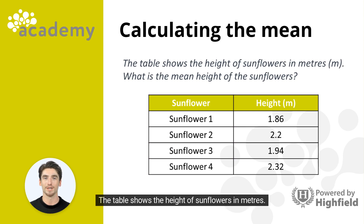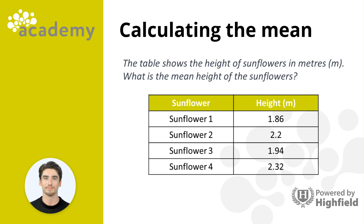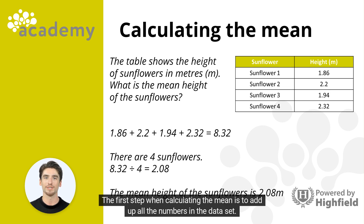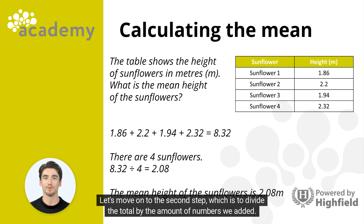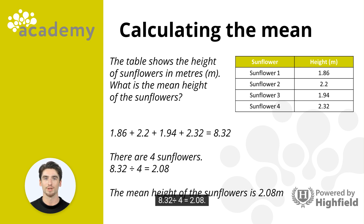Now it's your turn. The table shows the height of sunflowers in meters. What is the mean height of the sunflowers? The first step is to add up all the numbers: 1.86, 2.2, 1.94 and 2.32. The total is 8.32. The second step is to divide the total by the amount of numbers — we added the heights of 4 sunflowers, so 8.32 divided by 4 equals 2.08. The mean height of the sunflowers is 2.08 meters.